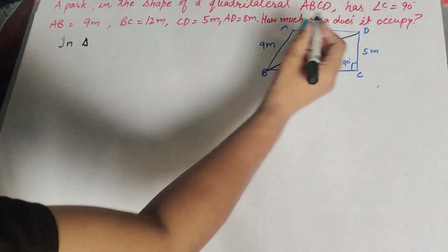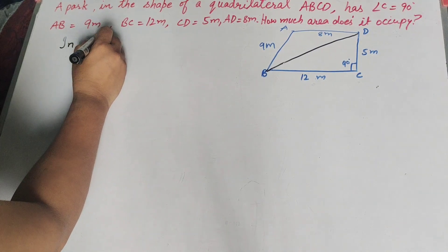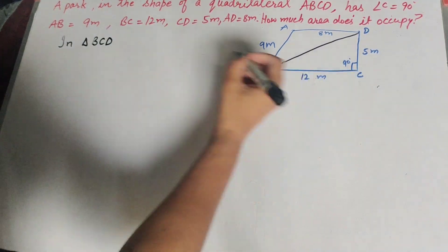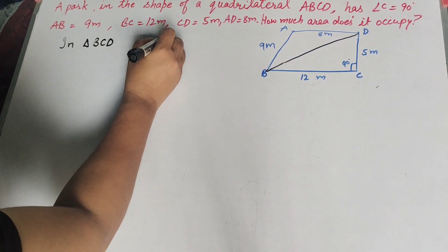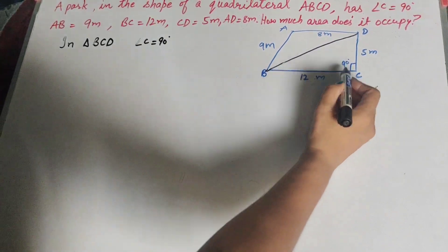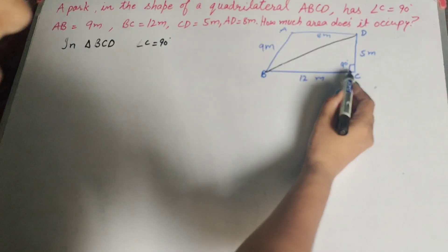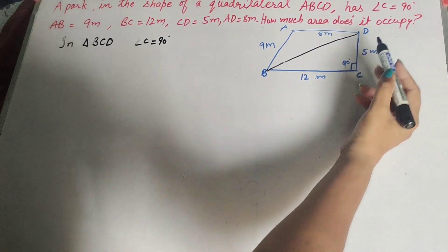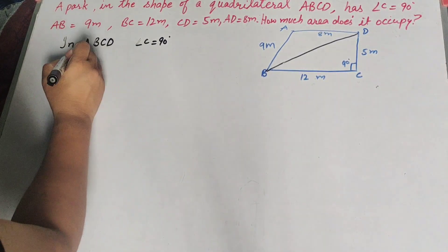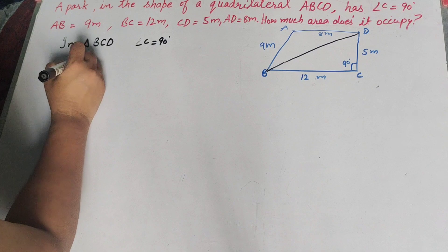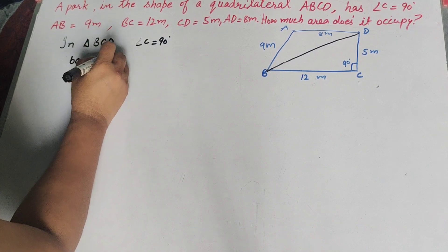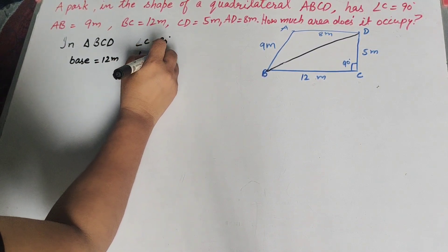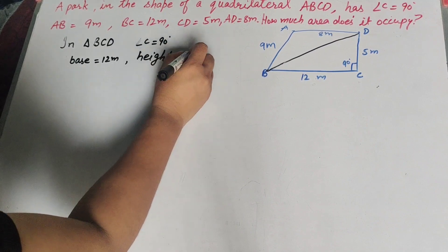Now in triangle BCD, angle C is equal to 90 degrees as given. That means triangle BCD is a right angle triangle. In this triangle, the base is equal to 12 meters and the height is equal to 5 meters.